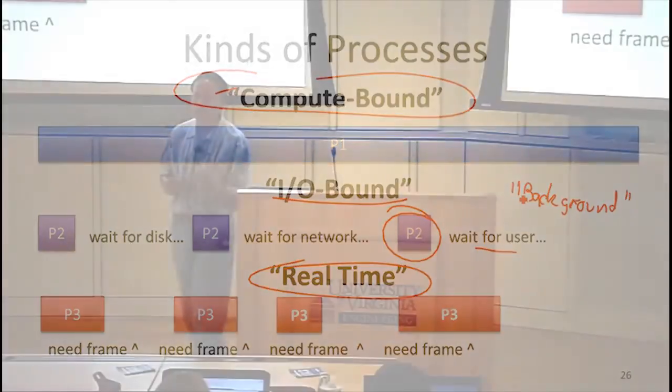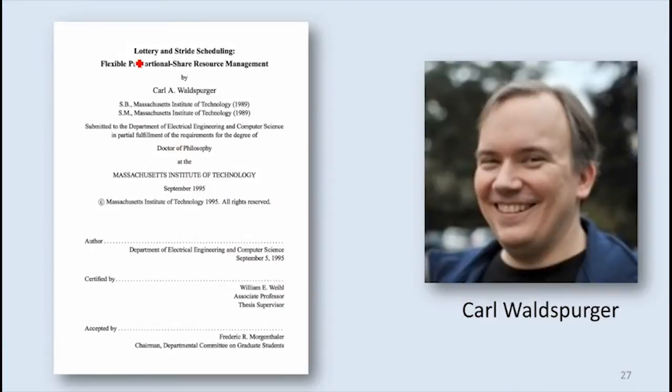You want something somewhat more sophisticated than just priority preemptive — you want to treat different processes differently. We're going to look at what UNIX actually does. Let me tell you about two other scheduling items from Karl Waldberger's PhD dissertation. This is one of the few examples of a dissertation that's actually widely read and well worth reading. It introduced two kinds of scheduling.